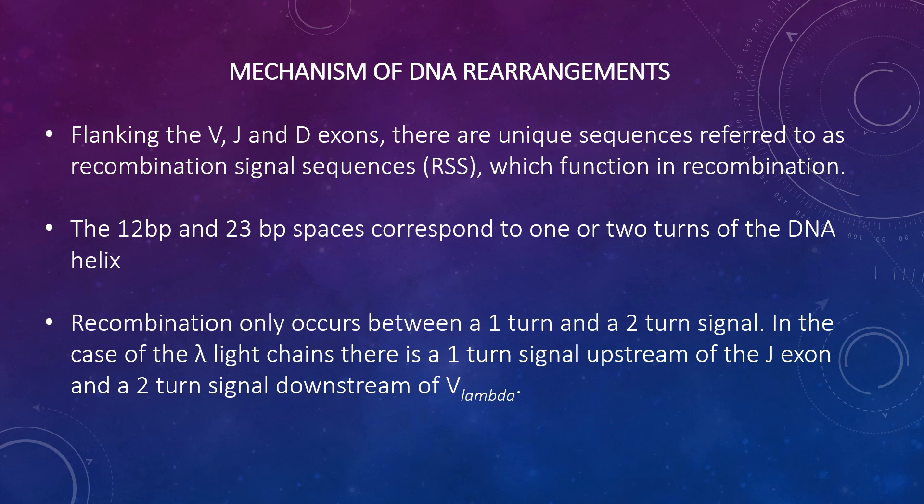The recombination event is catalyzed by two proteins, RAG1 and RAG2. Mutation of the genes for these proteins results in severe combined immunodeficiency disease, in which both T and B cells are deficient, since these proteins and the RSS are involved in generating the antigen receptor diversity for both T and B cells.